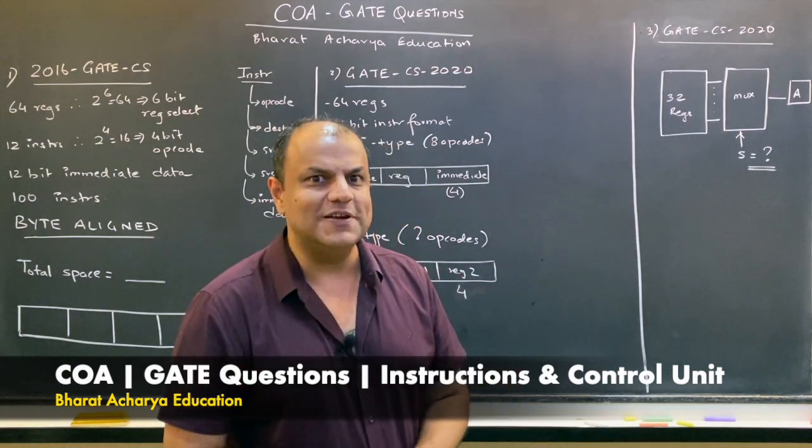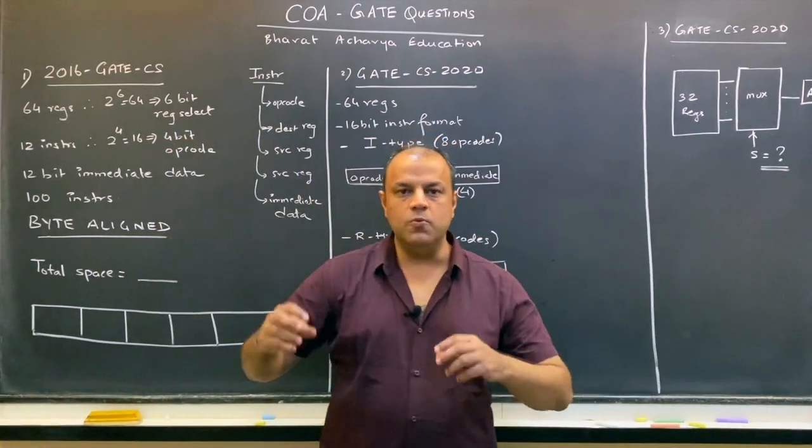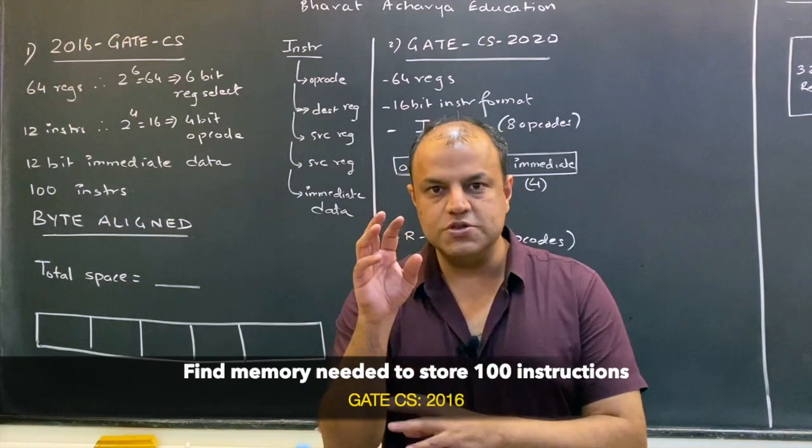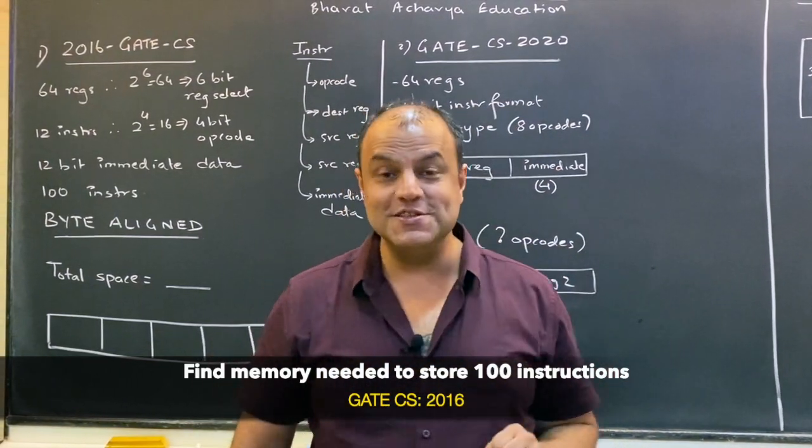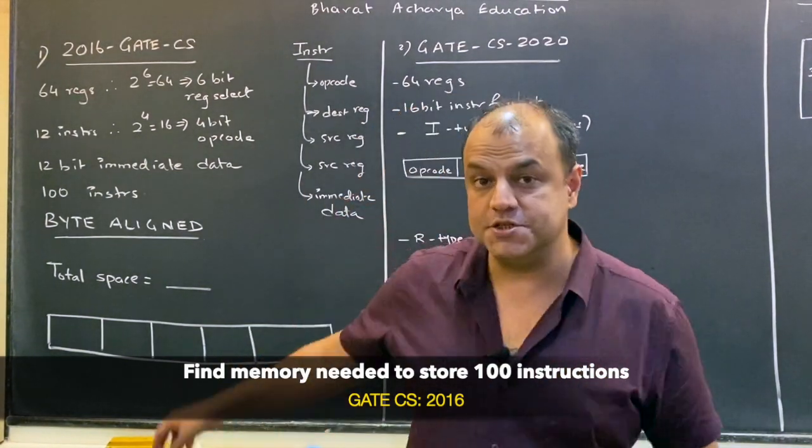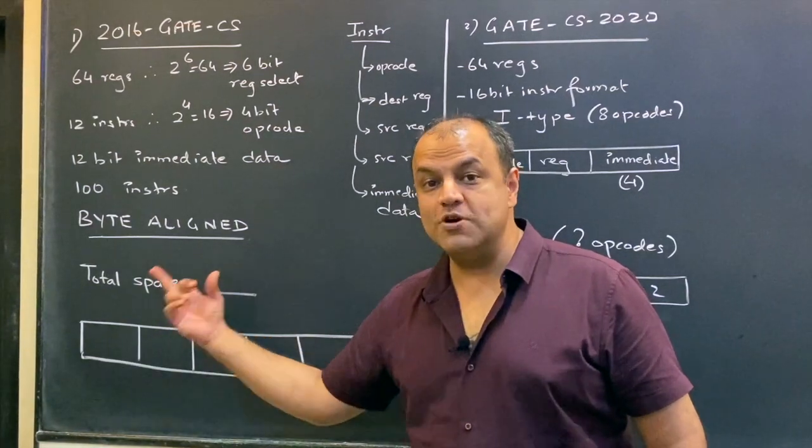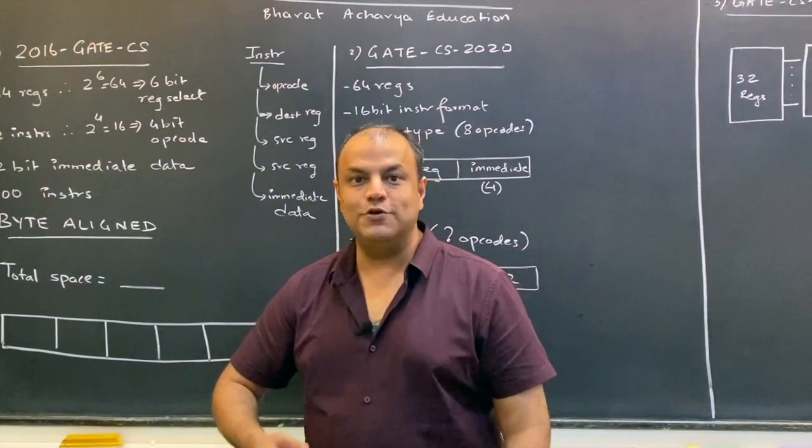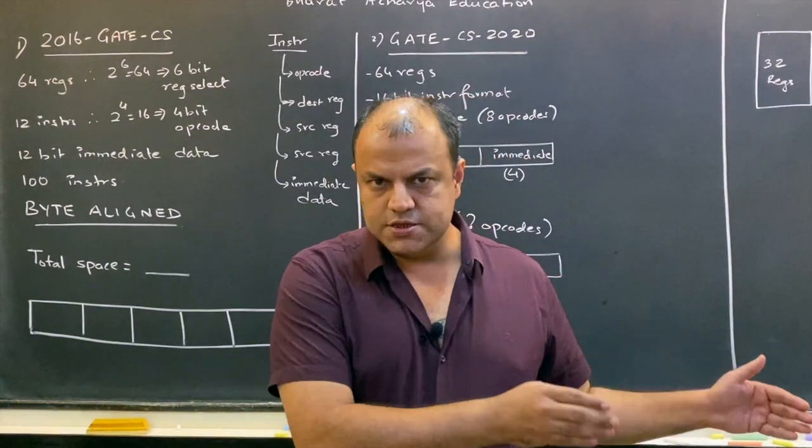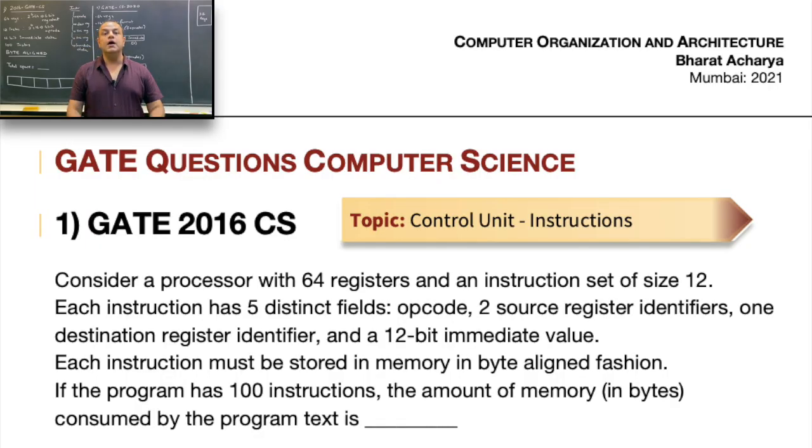I'll be making multiple videos on GATE questions of control units because these are tricky and come a lot. The first question came in 2016 where they gave an instruction format in text. There is a processor with certain registers and instructions—determine the memory space required to store 100 instructions. There was a key word: the instructions are stored in byte-aligned form. I'm going to show the entire question on screen and hold that for 10 seconds.